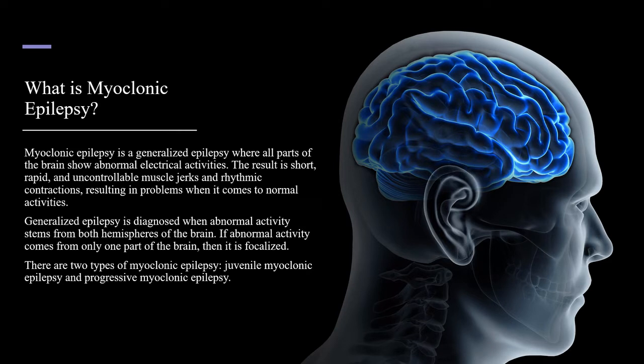Myoclonic epilepsy is a generalized epilepsy where all parts of the brain show abnormal electrical activities. The result is short, rapid, and uncontrollable muscle jerks and rhythmic contractions, resulting in problems when it comes to normal activities. Generalized epilepsy is diagnosed when abnormal activity stems from both hemispheres of the brain. If abnormal activity comes from only one part of the brain, then it is focal. There are two types of myoclonic epilepsy: juvenile myoclonic epilepsy and progressive myoclonic epilepsy.